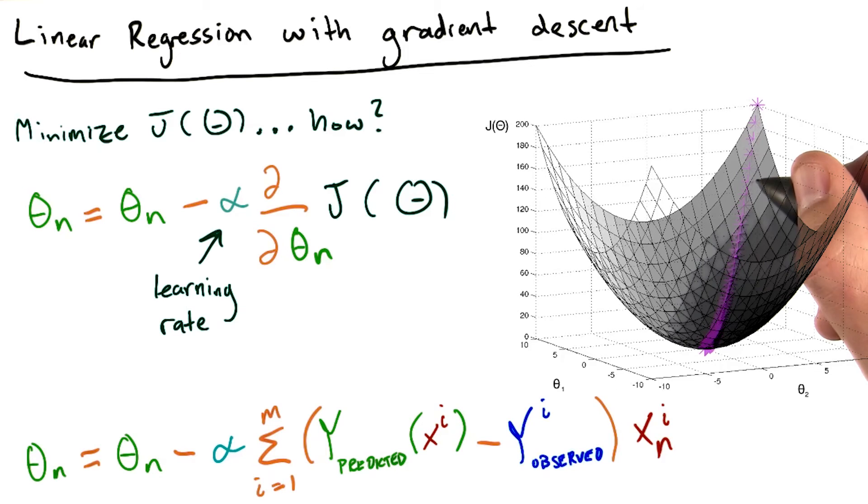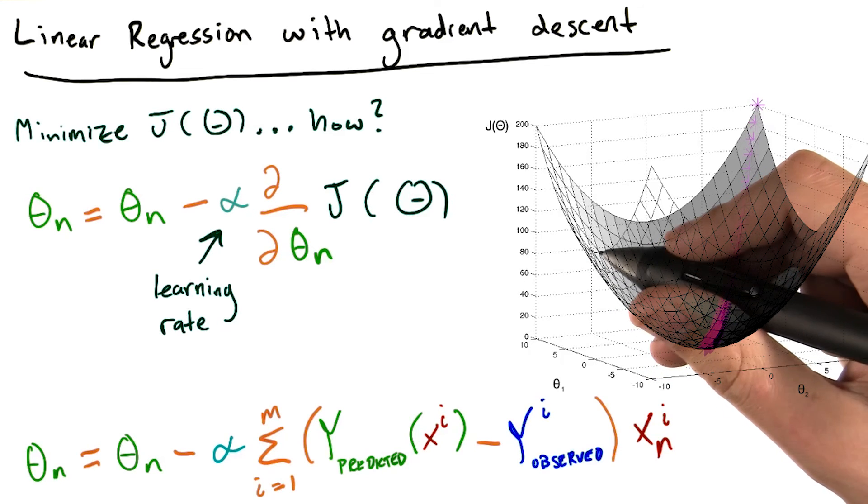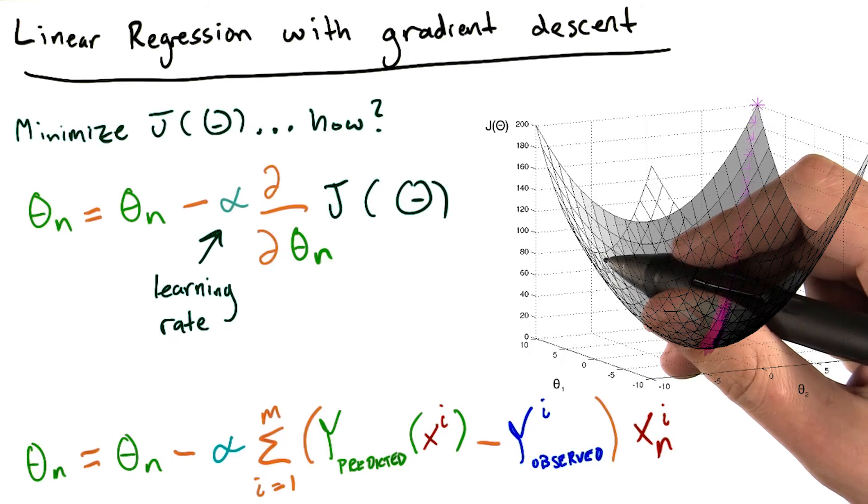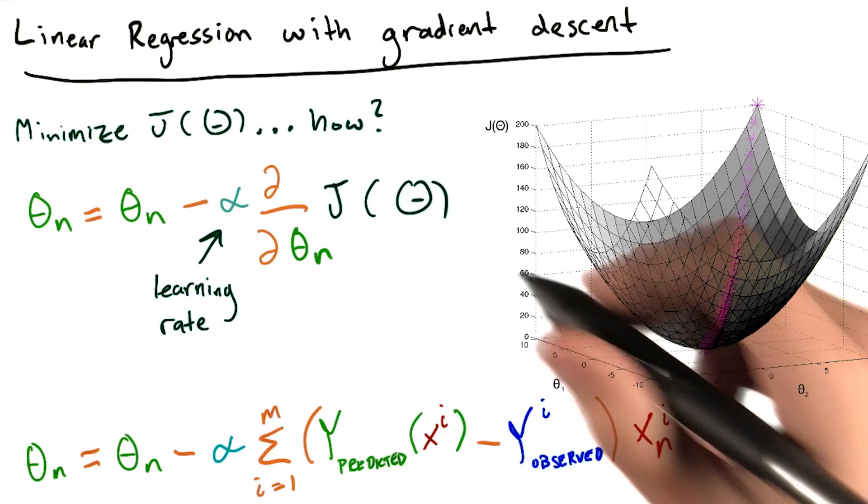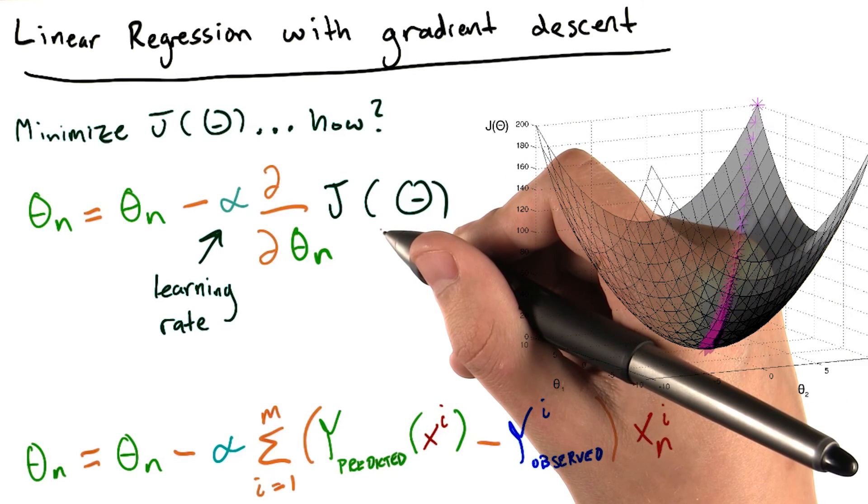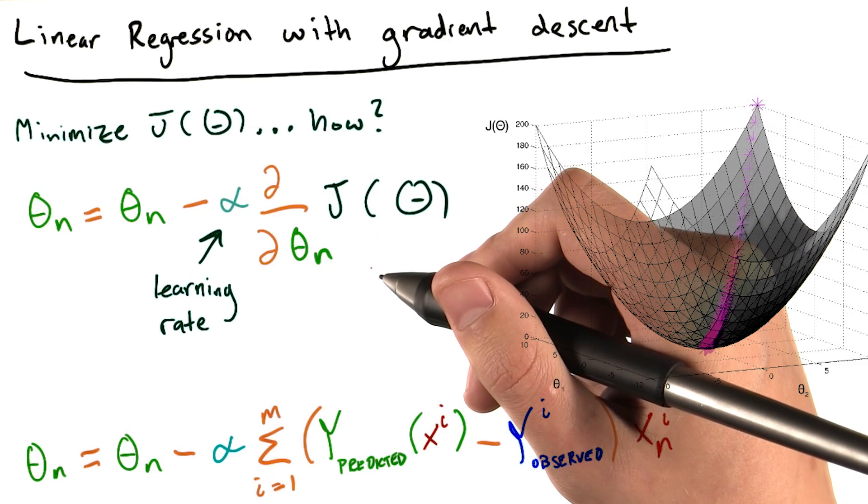Larger values of alpha can converge more quickly, but they're more prone to skip over the cost function's minimum value. This can cause J to increase rather than decrease monotonically. The best way to make sure that your alpha is suitable is simply to keep track of your cost function's value as you iteratively update it and make sure it's always going down. If not, your learning rate is probably too high.